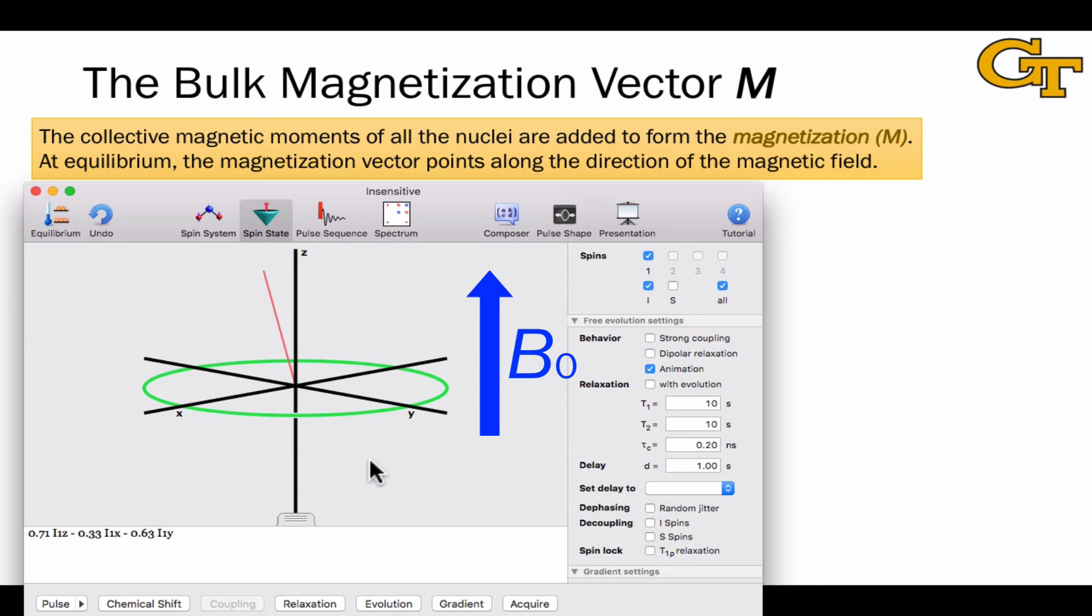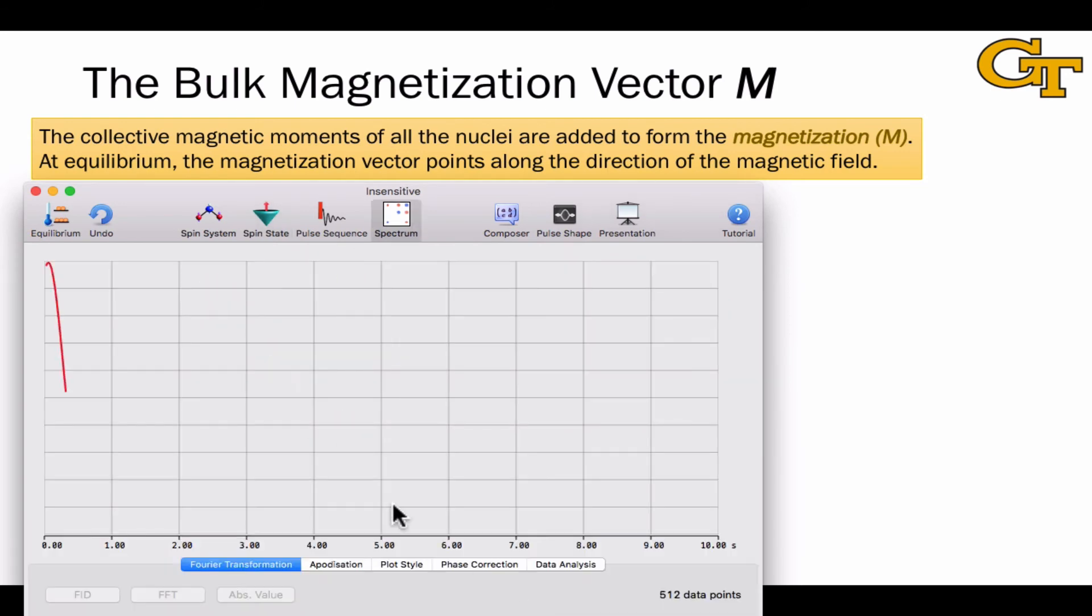If we observe what happens with time running, we find that the magnetization vector actually rotates around the applied field like you're seeing here. Remember that B0, as we've drawn it so far, points vertically in the z direction. That frequency of rotation of the magnetization vector around the applied magnetic field vector is the frequency that corresponds to the energy difference between the up and down spin states. And that frequency is affected by the magnetic field strength and the chemical environment of the proton.